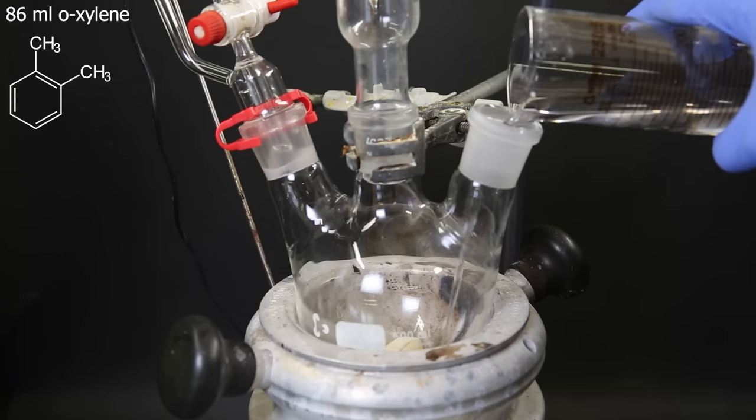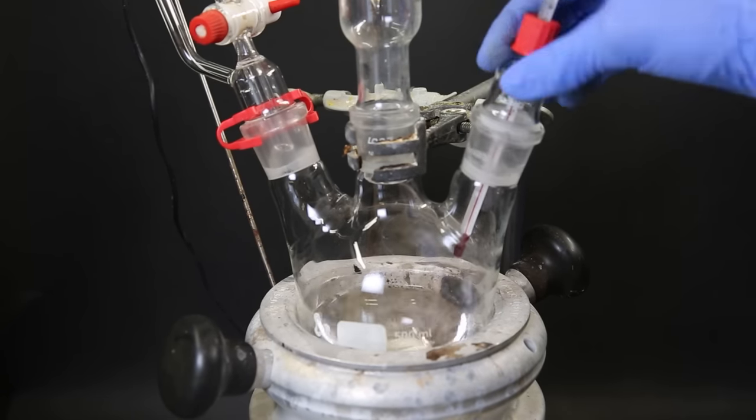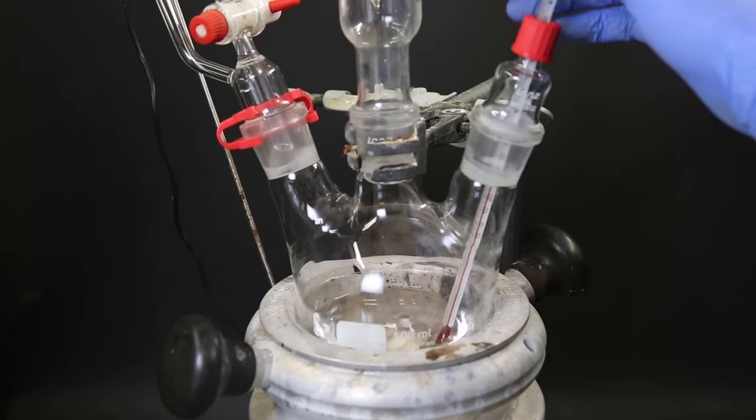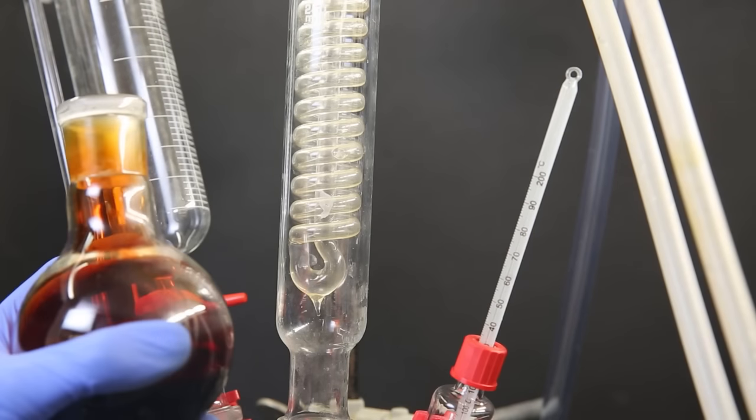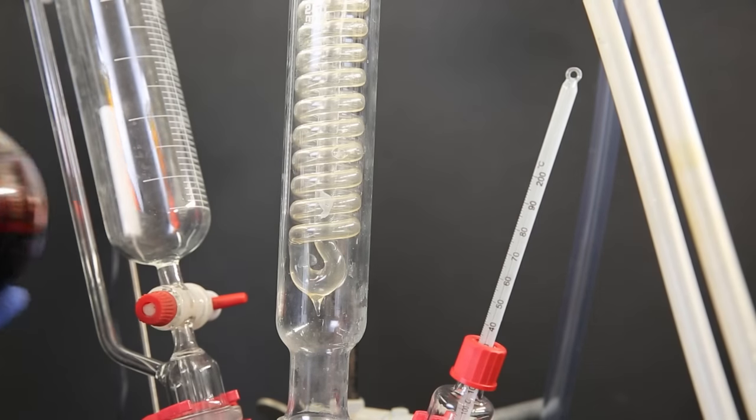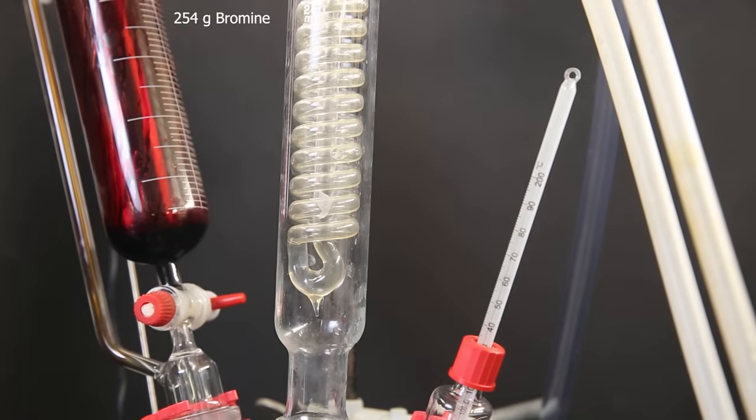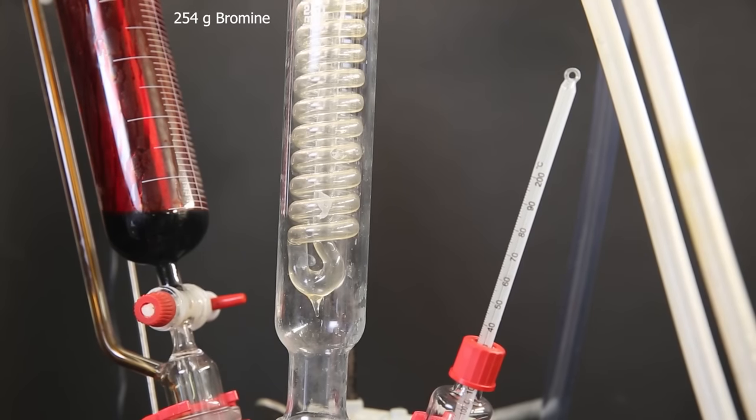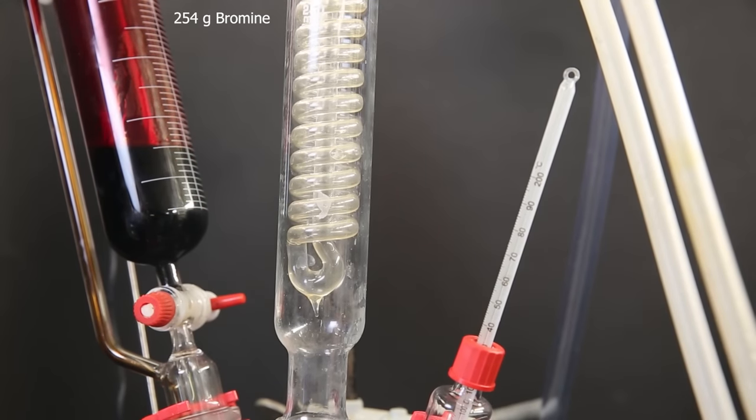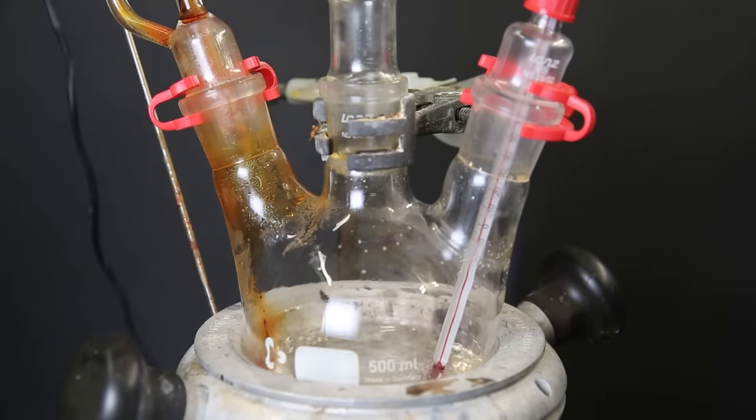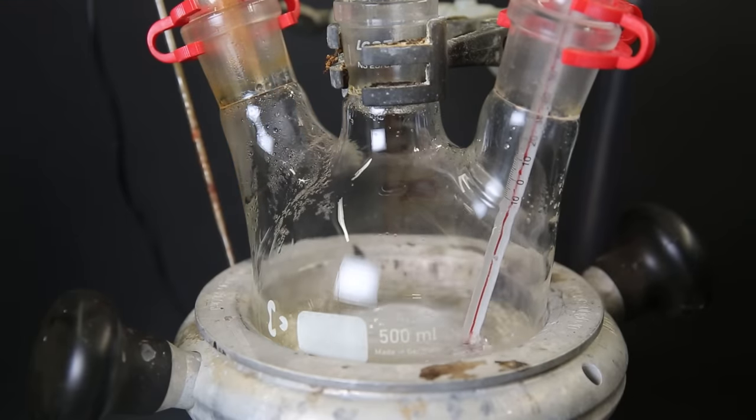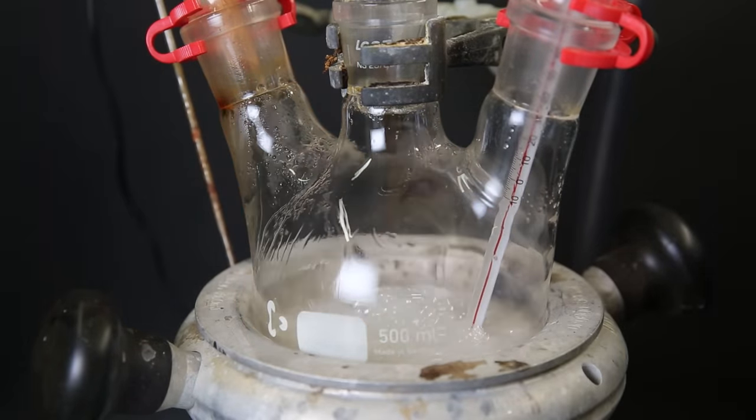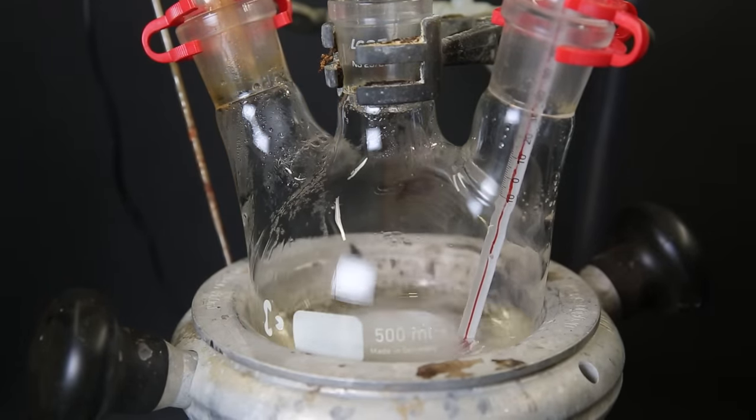Now to the flask, I add in 86 mL of o-xylene, and then attach a thermometer that reaches into the xylene. I start heating the xylene to a reflux, and then to the dropping funnel I add in 254 grams of freshly prepared bromine. A little bit went into the arm of the dropping funnel and into the flask, but this doesn't really matter for this reaction. Now I open the dropping funnel and start adding the bromine dropwise to the boiling hot xylene. I also set up a strong lamp nearby to illuminate the setup, because the light will hit the bromine and produce two radicals that will react with the xylene.